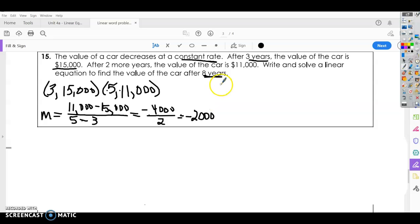Alright, so take our slope and our point and plug it in. Again, you can use either point you want. Y minus, just use the smaller number here, $11,000 equals our slope, negative $2,000. And X minus our X here. Alright, so negative 2,000X and a negative and a negative make that a positive $10,000.